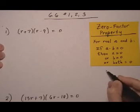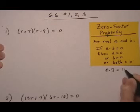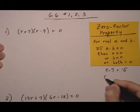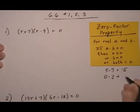And if we just look at some number examples of that, let's say we have 5 times 3, well that equals 15. If one of those was a zero, let's say we had zero times 3, then the product is zero.